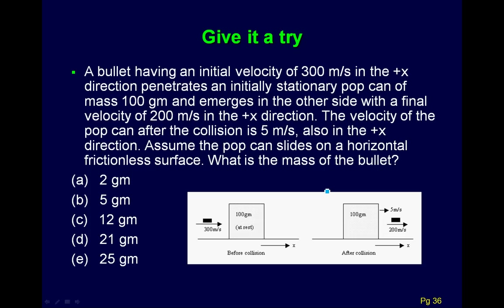Here we have a bullet going through a pop can. Initially the bullet has a speed of 300 meters per second and the pop can is at rest. The pop can has a mass of 100 grams. Afterwards, the bullet exits at 200 meters per second and the pop can moves at 5 meters per second. What is the mass of the bullet? Assume the pop can slides on a horizontal frictionless surface.